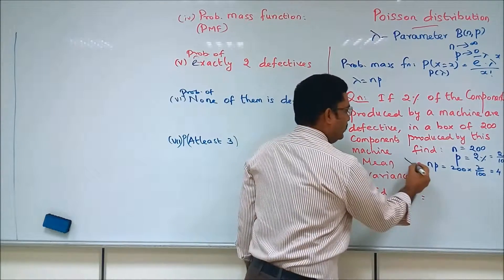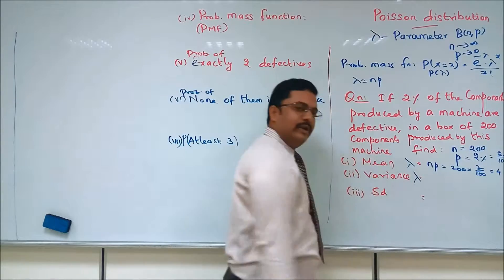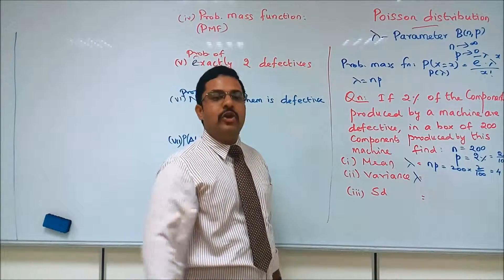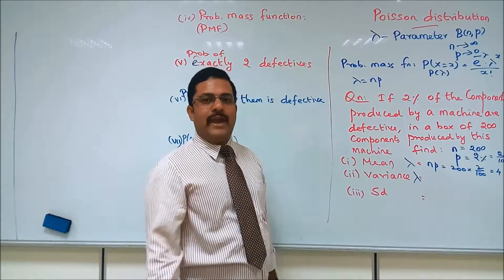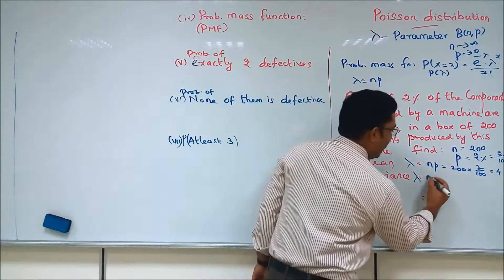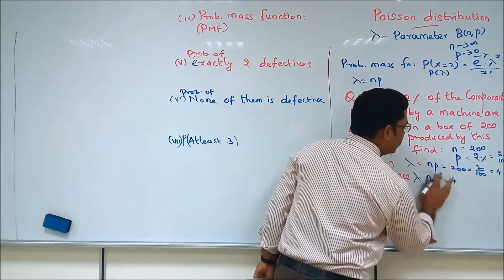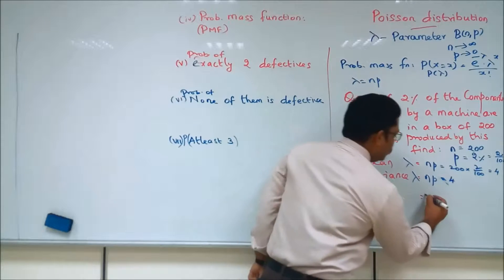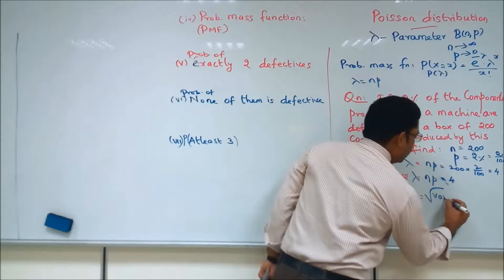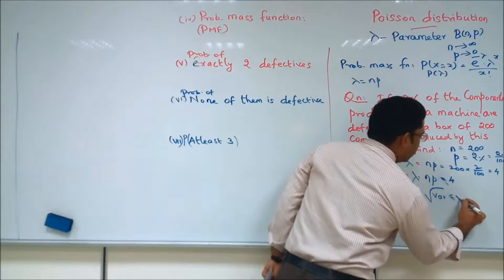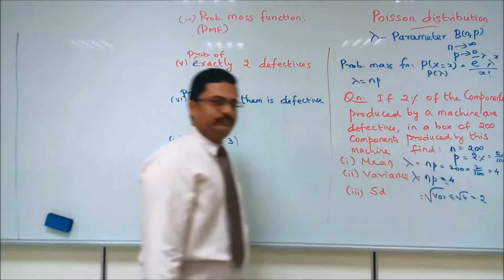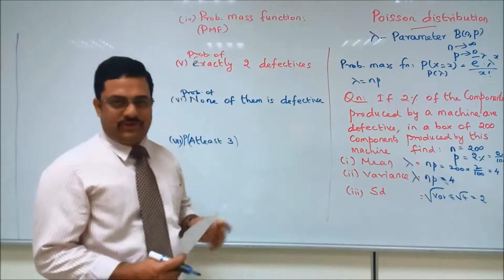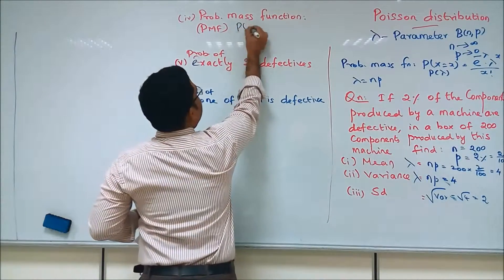The mean and variance of a Poisson distribution are the same — both equal to lambda, which is equal to n times p. So variance is also equal to 4. The standard deviation is the square root of variance, which is equal to the square root of 4, which equals 2.